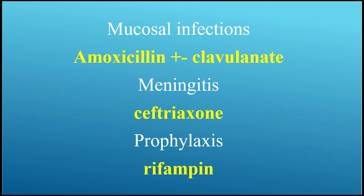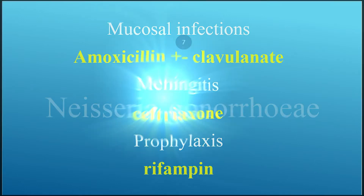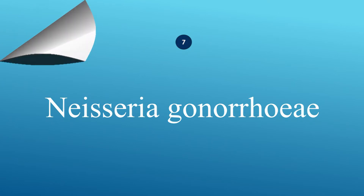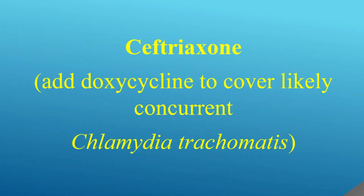For prophylaxis, use rifampin. How do you treat Neisseria gonorrhea? Use ceftriaxone. Add doxycycline to cover likely concurrent Chlamydia trachomatis.